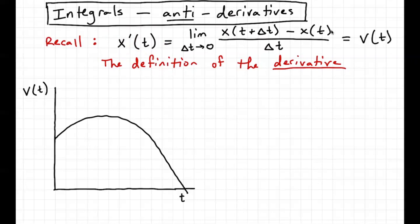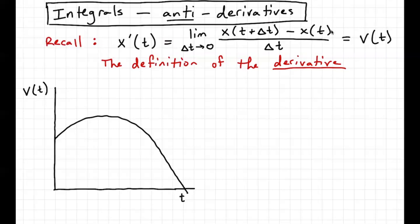It's equivalent notation to say that x prime of t is the derivative of x, which is the same thing as the velocity of whatever object we're talking about as a function of time. That's the definition of the derivative and we're going to need to use it a little bit later.